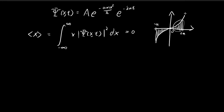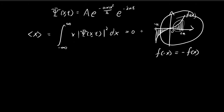One way to check if a function f of x is an odd function: you substitute in f of negative x and see if it's equal to negative f of x. You can see that it is definitely true for this expression. So if you're integrating from negative infinity to positive infinity, the resulting integral is equal to zero. This is how you find the expected value of x.